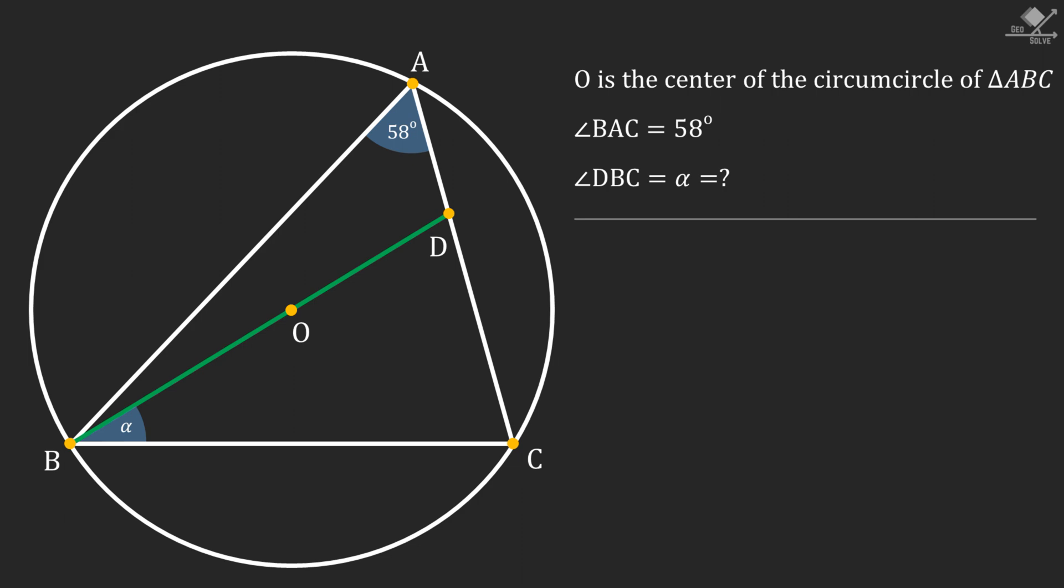First notice that line segment BD is passing through the center of the circle. If we extend this line segment to intersect the circle at point P, then chord BP will be the diameter of the circle.